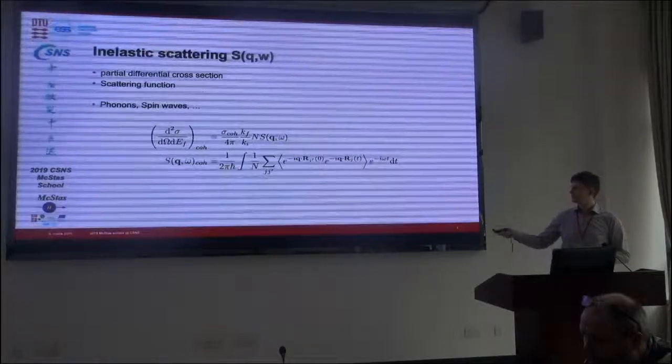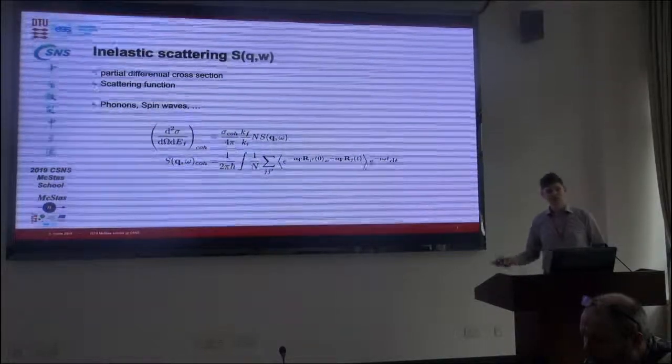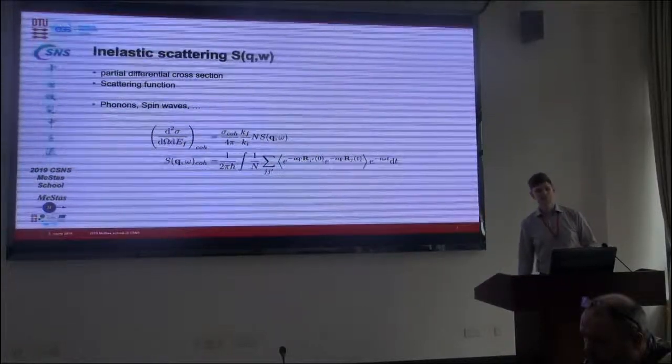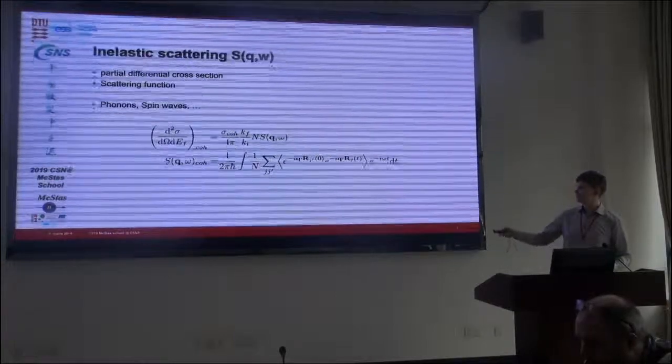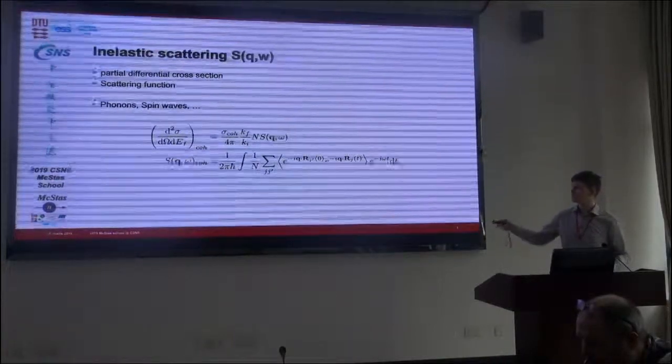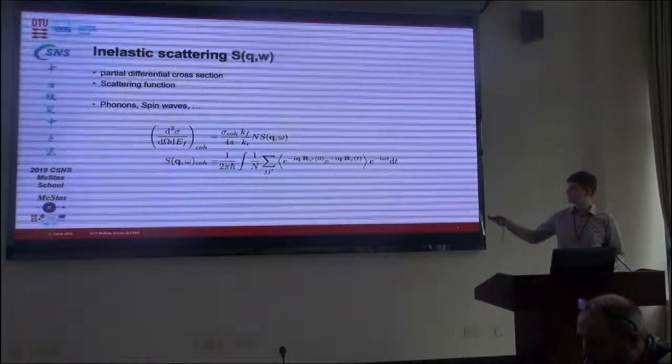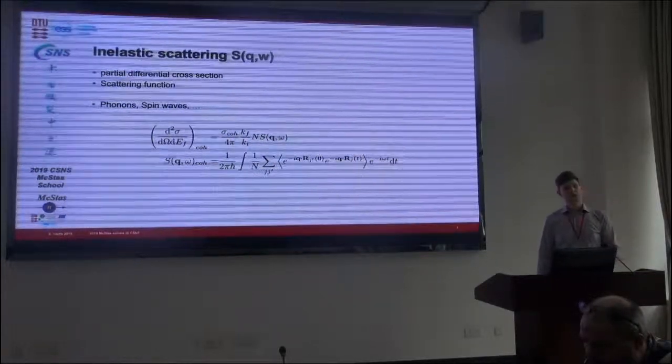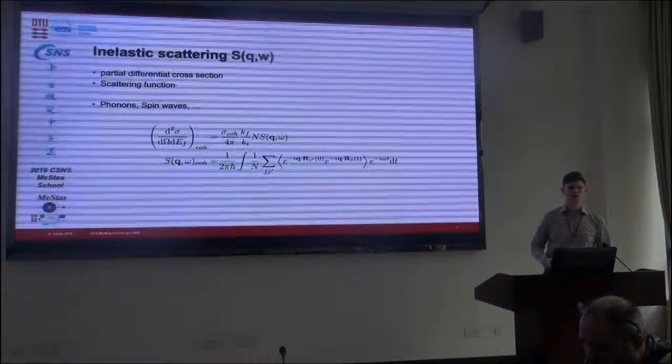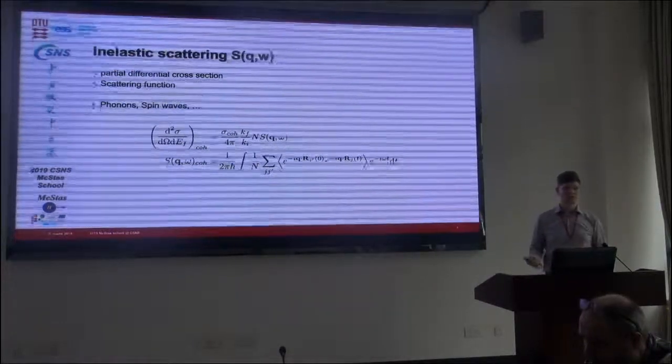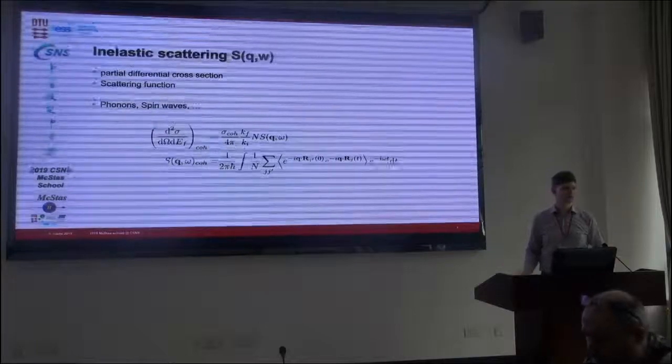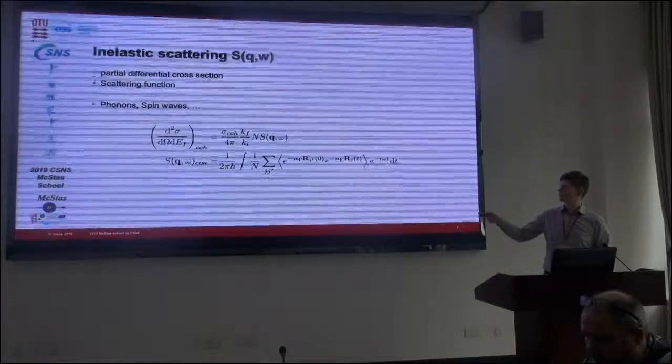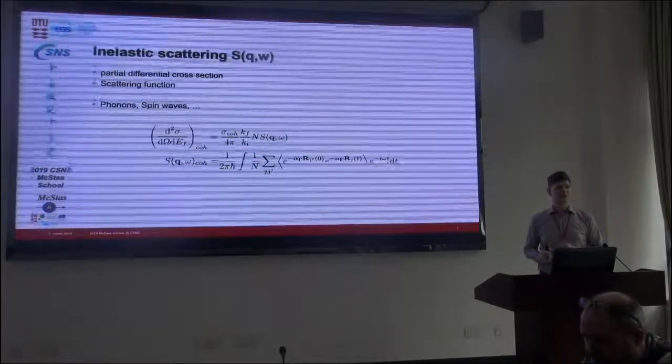There is a complex way to calculate this scattering function from fundamental operators of the system. So, this, in principle, has nothing directly to do with neutron scattering. All of that is in this part of the equation. And so, it's a natural point of handing over information from the theoretical physicist, working just on the solid-state physics, and then we can plug it into this equation and get our scattering cross-sections.